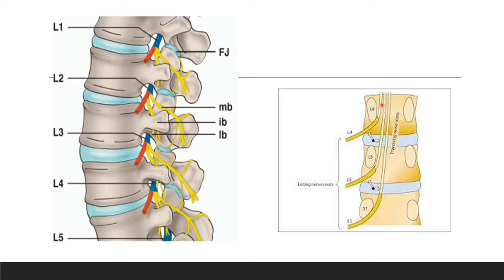What is this exiting and traversing nerve root? Between L4 and L5 vertebrae, L4 will be the exiting nerve root and L5 will be the traversing nerve root. A lateral disc or far lateral disc herniation will affect the exiting nerve root — in this case L4 — while a central disc herniation will affect the traversing nerve root, L5.